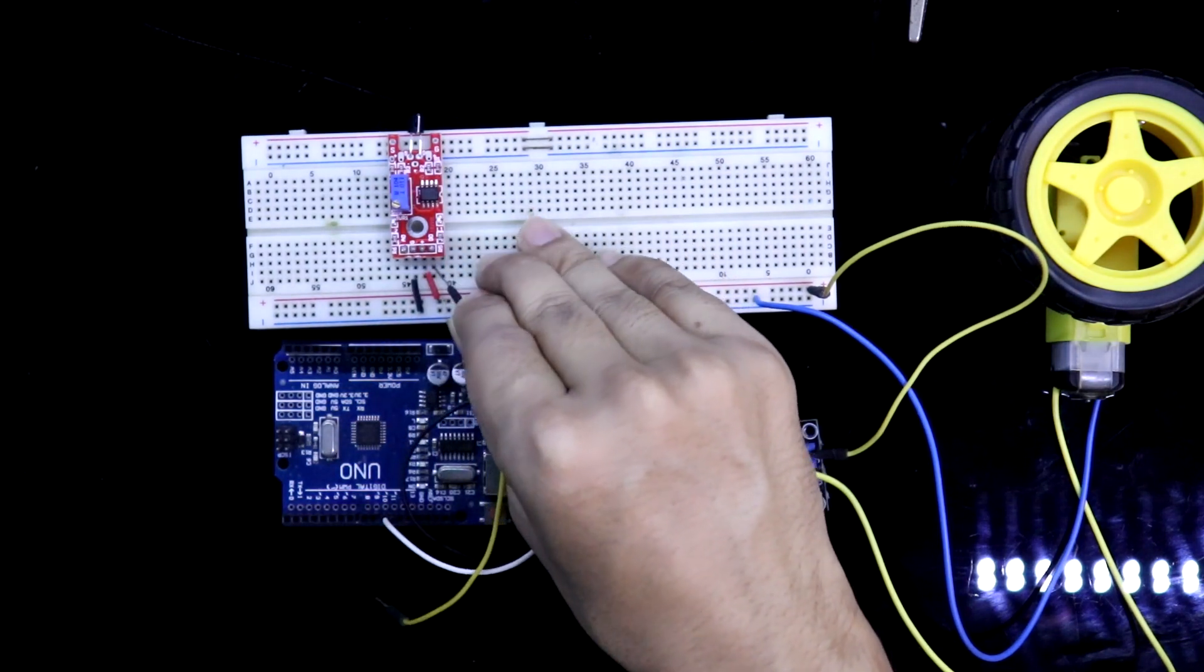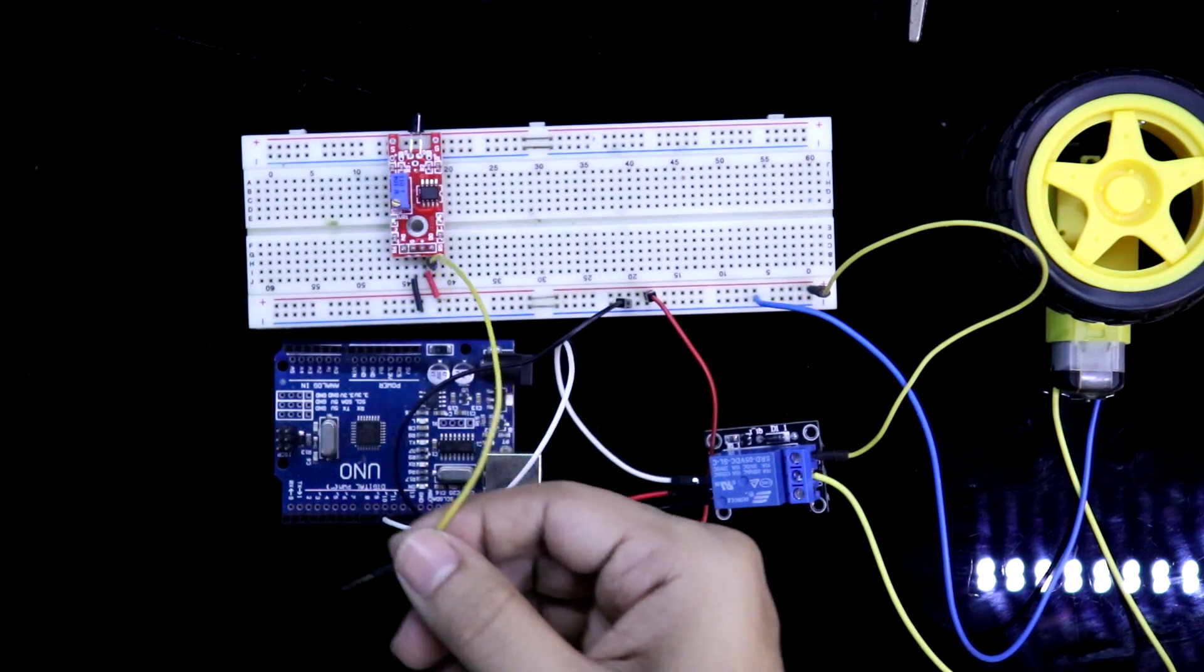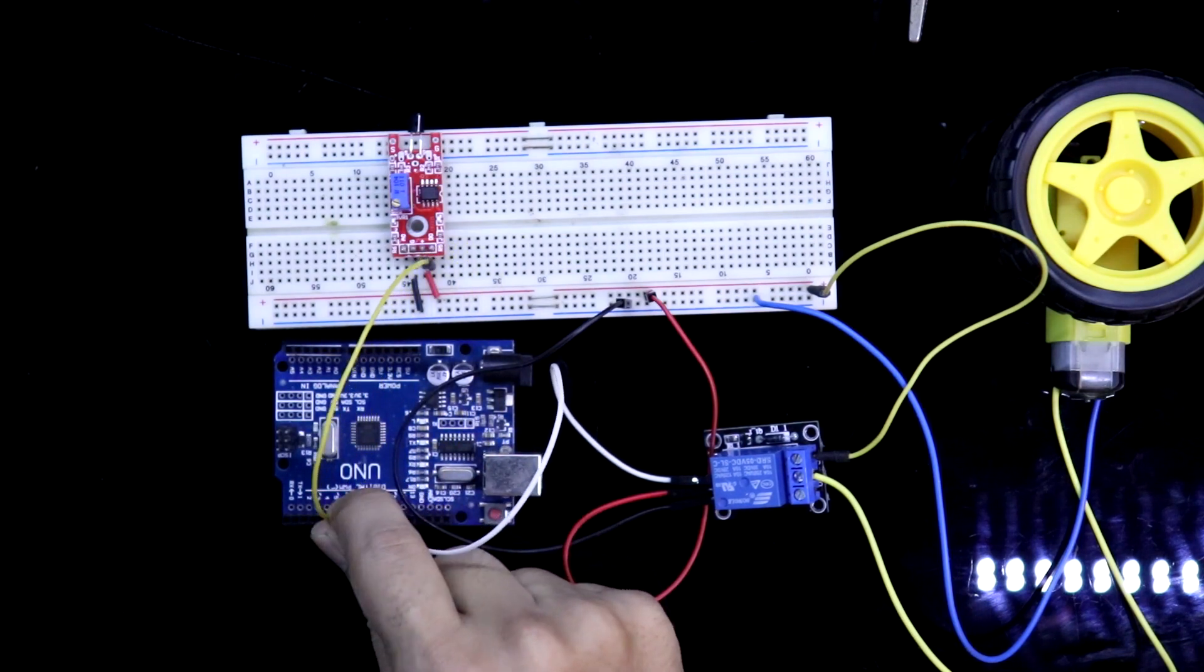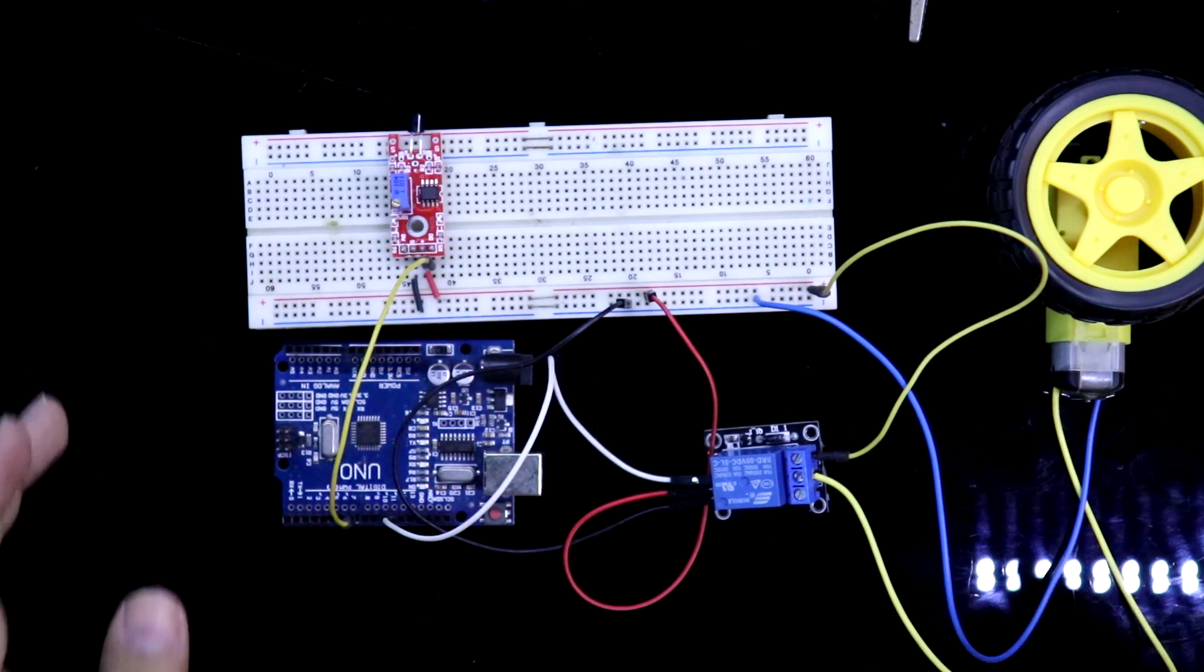This is digital out of the sensor and it is connected to pin 7 of the Arduino. So this is it.